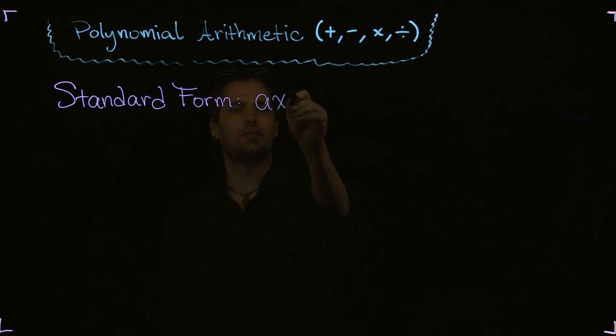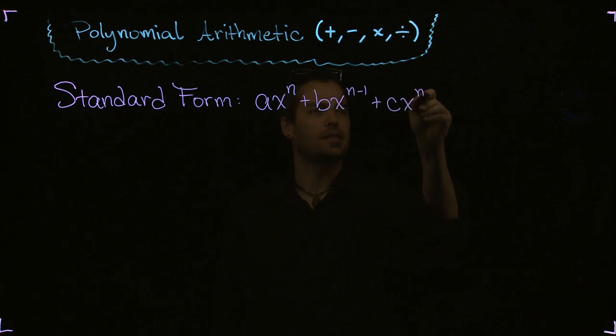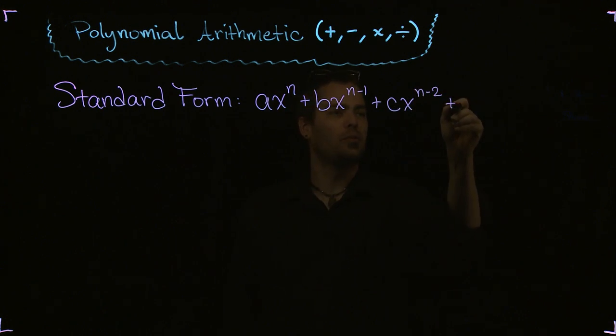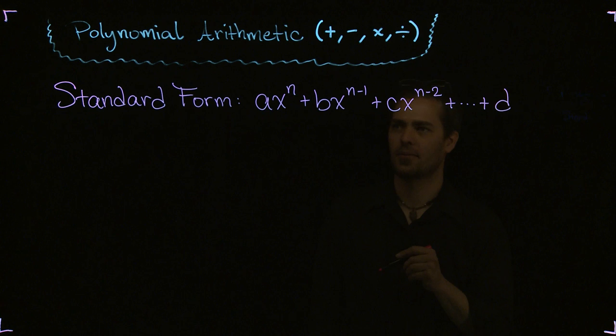ax^n plus bx^(n-1) plus cx^(n-2) plus... and that just keeps going until you get down to something without an x, like that.